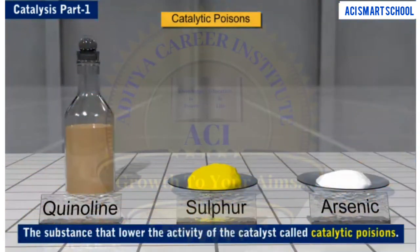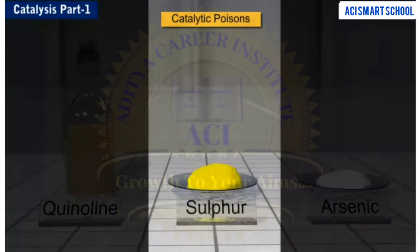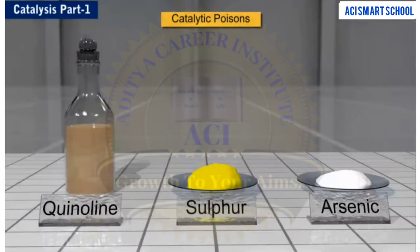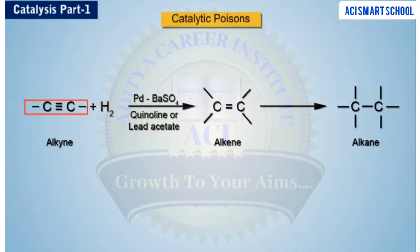There are certain substances that lower the activity of the catalyst. They are called catalytic poisons. Cremeline, sulphur, and arsenic are commonly used for poisoning the catalyst. For example, Lindlar catalyst is poisoned with quinoline or lead acetate for carrying out the hydrogenation of an alkyne to an alkene. Otherwise, the reduction will go on to the alkane stage.